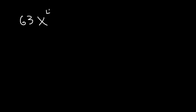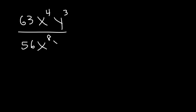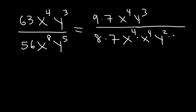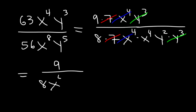Here's a similar example: 63x to the fourth y to the third, over 56x to the eighth y to the fifth. 63 is 9 times 7, and 56 is 8 times 7. x to the eighth is x to the fourth times x to the fourth, and y to the fifth is y squared times y cubed — since 2 plus 3 is 5 and 4 plus 4 is 8. Cancel the 7, cancel x to the fourth, and cancel y cubed. The final answer is 9 divided by 8x to the fourth y squared.